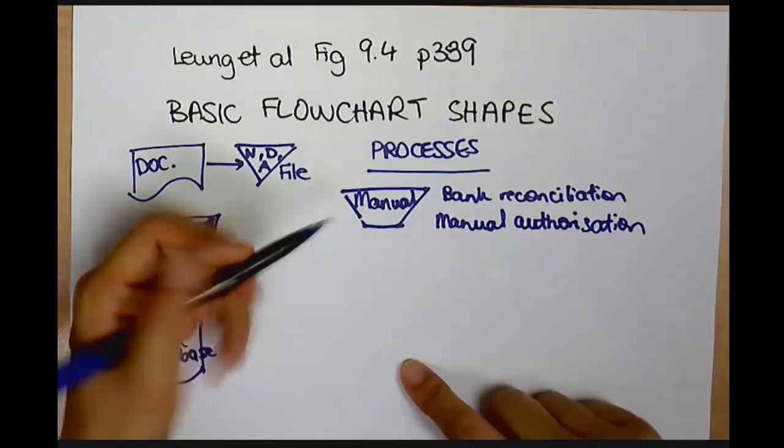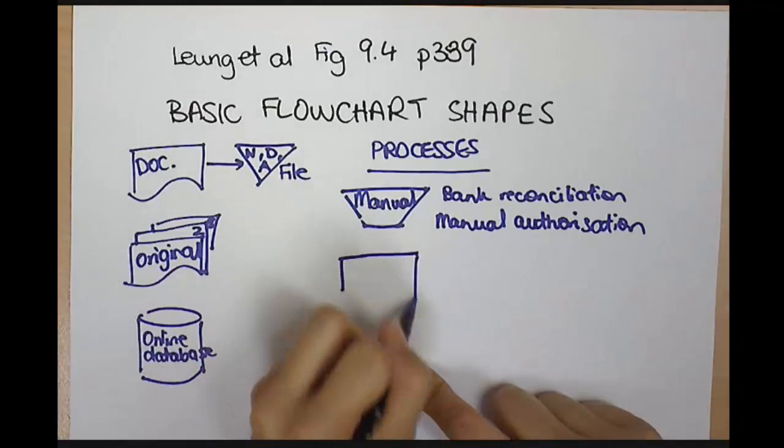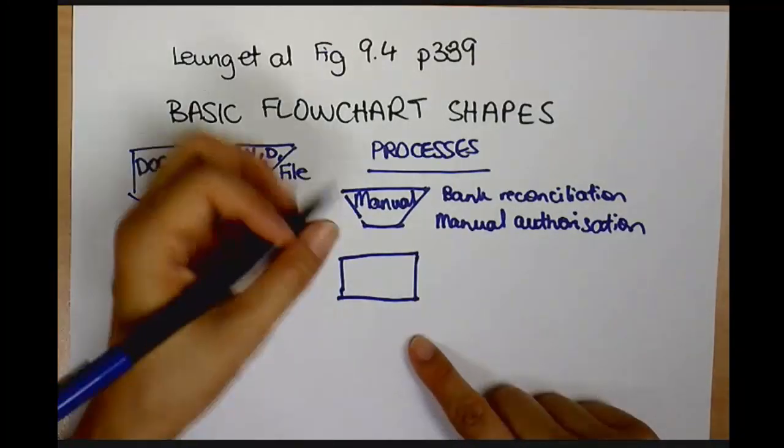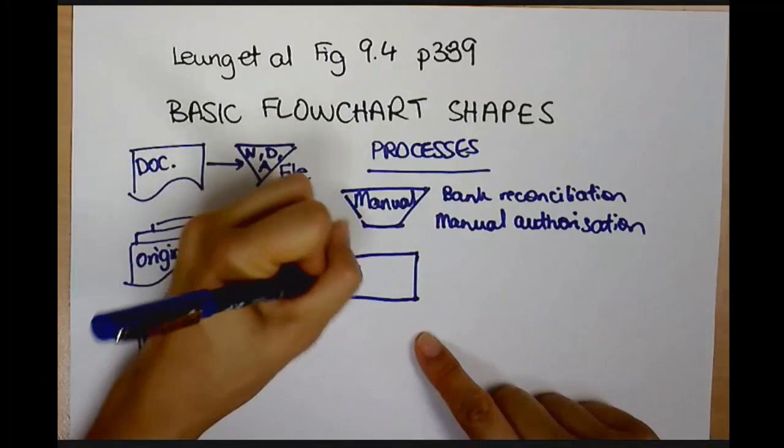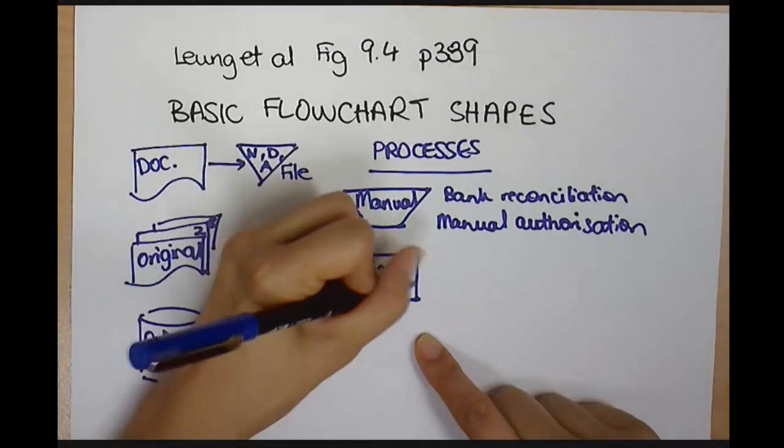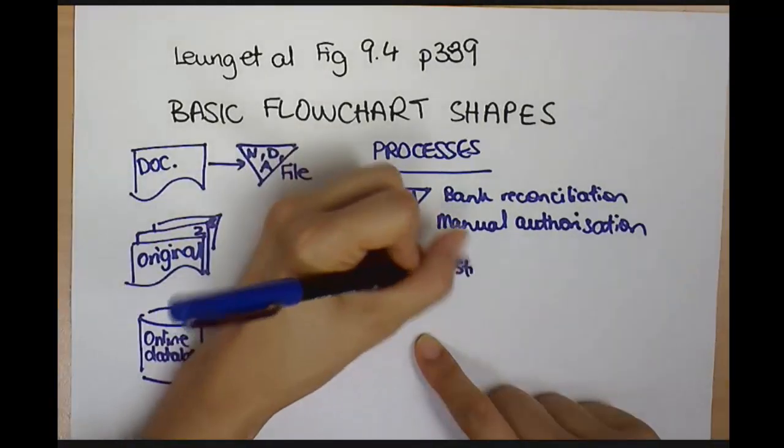If I'm doing some sort of process, so perhaps I'm inputting an order, alright, then I do it here in a rectangle. So that's an online or a computer process. So that might be posting journal entries, for example.